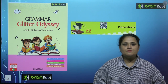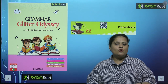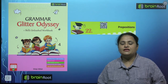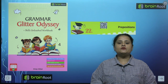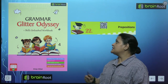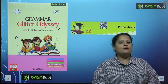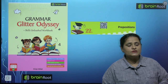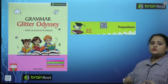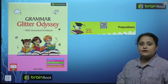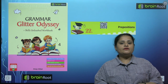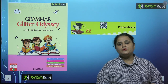Hello children, kaise hai aap sab? I hope you all are very fine. This is your teacher Pooja Sahani with your book Grammar Glitter at Odyssey by Brain Root series. Aur hum a gaye hai chapter number 22 par, and chapter number 22 is prepositions.